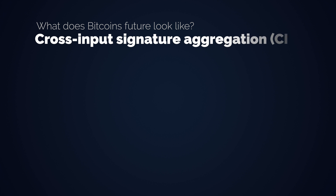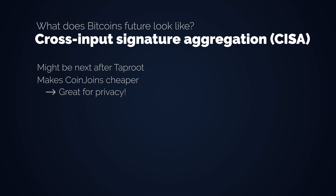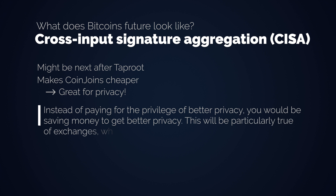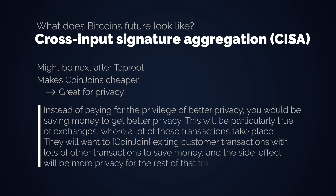Last but not least, we have Cross Input Signature Aggregation, which is likely the next step now that Taproot is activated. This feature, also known as CISA, is great for privacy reasons because it enables cheaper coin joins. Instead of paying for the privilege of better privacy, you would be saving money to get better privacy. This will be particularly true of exchanges, where a lot of these transactions take place. They will want to coin join existing customer transactions with lots of other transactions to save money, and the side effect will be more privacy for the rest of their transactions.